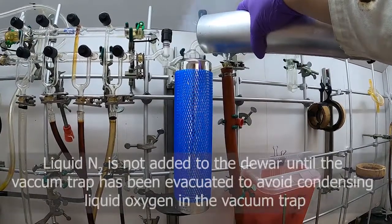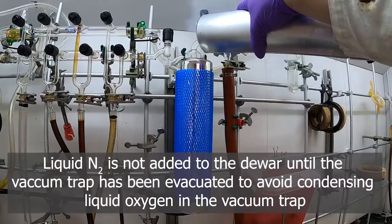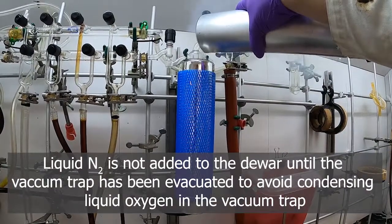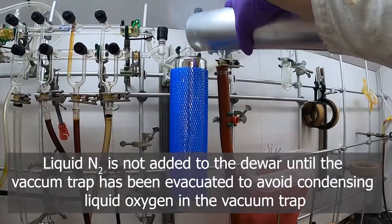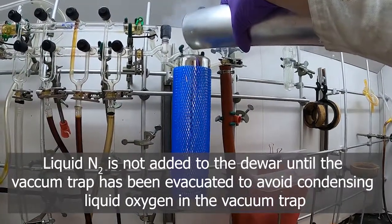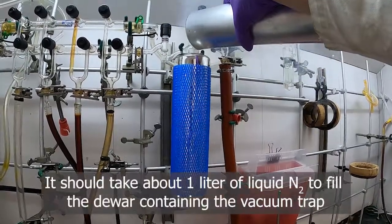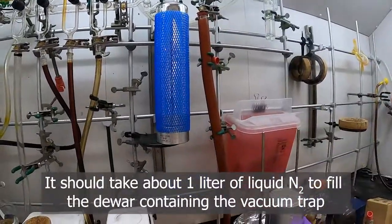We don't want to add any nitrogen or have nitrogen on the trap when it's pulling air so that we don't condense liquid oxygen. That's an explosion risk, especially if the liquid oxygen can come in contact with organic solvents. There should be enough nitrogen for the trap.